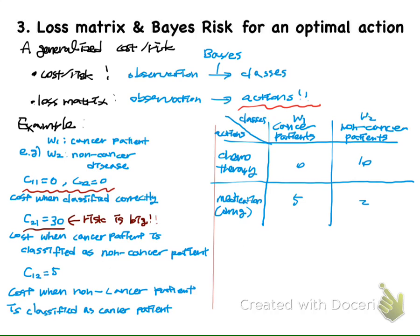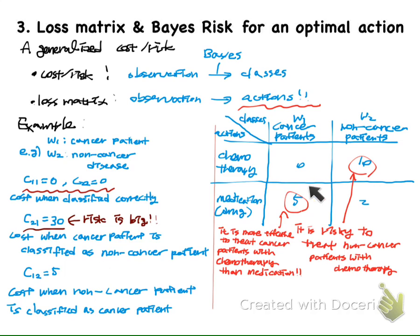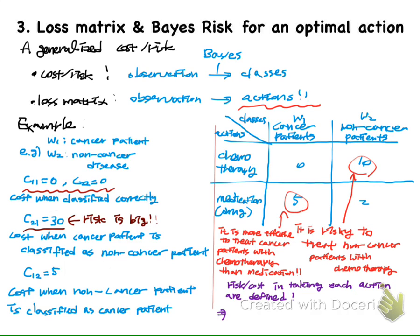If there are two actions that we can take to treat the patients — one is the chemotherapy and the other one is the medication — we can define the risk factor such that it is riskier to treat the non-cancer patients with chemotherapy. And here, it is still riskier but less riskier than the previous case to treat the cancer patient with medication. So, now we define the risk and cost in taking each action from this loss matrix, and we want to take an optimal action that will minimize cost or risk.